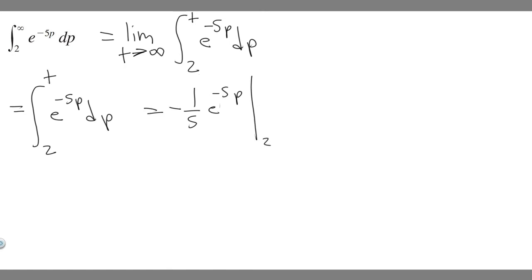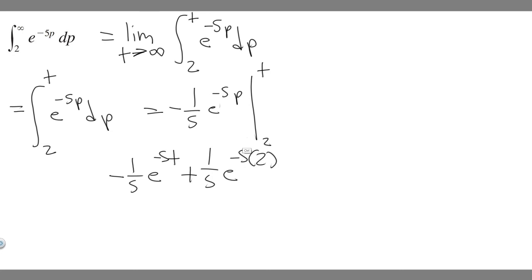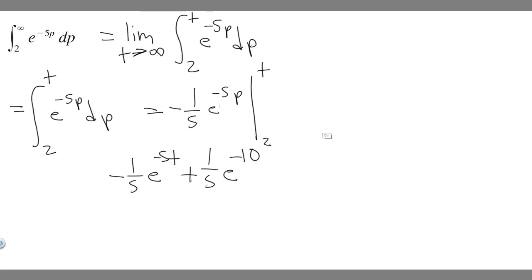Now we just evaluate from 2 to t. Plugging in t gives minus 1 over 5 e to the minus 5t. Then minus plugging in 2 gives minus minus 1 over 5, which becomes positive, so plus 1 over 5 e to the minus 10. Since e to the minus 10 is the same as 1 over e to the 10, we can rewrite that term as 1 over 5e to the 10.